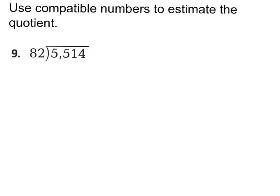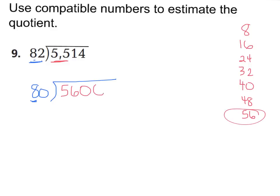Let's go down to number nine. It says use compatible numbers to estimate this quotient. Let's look at 82. What can we round that to? I'm going to go ahead and call that 80. Now, if you think about your multiples of eight, you know eight times one is eight, eight times two is 16, eight times three is 24, eight times four is 32, eight times five is 40, eight times six is 48, and eight times seven is 56. Now I'm going to stop right there because looking at these first two numbers, 55, it's really close to 56, isn't it? So I'm going to go ahead and just call this 5,600.